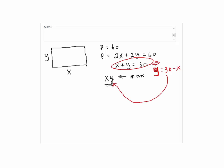Then you're going to substitute that into the second expression, which is xy. So we have x times 30 minus x. This is going to be the area function, which is x times 30 minus x.